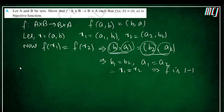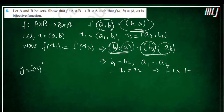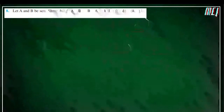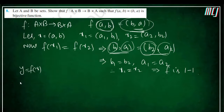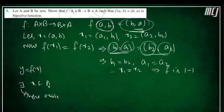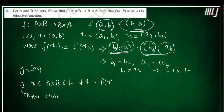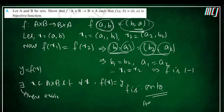Now for onto: for every element y in B×A, we can find an x in A×B such that f(x) = y. This satisfies the definition of an onto function. Therefore f is onto, and hence f is bijective.